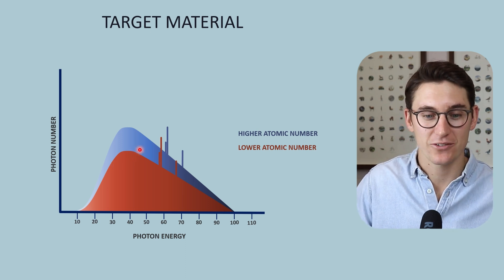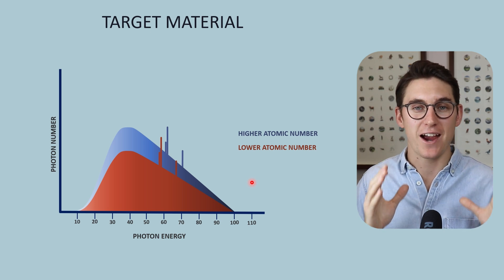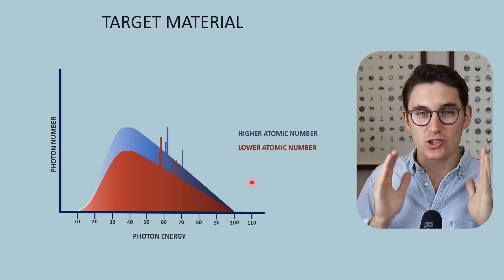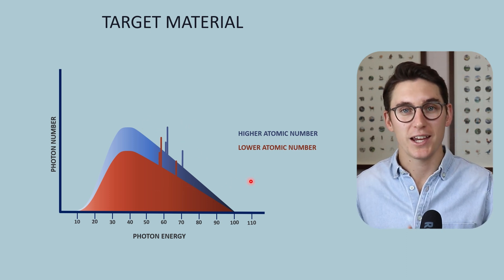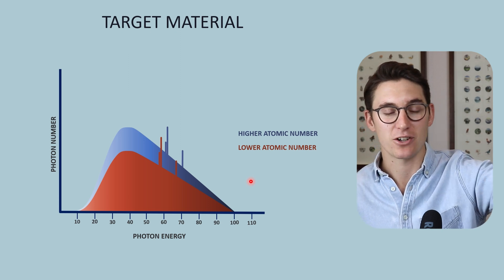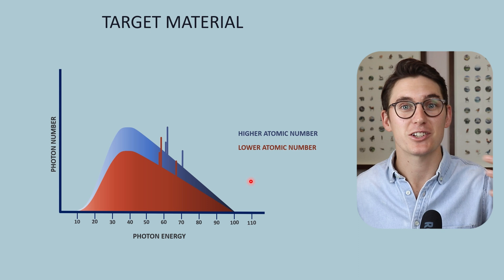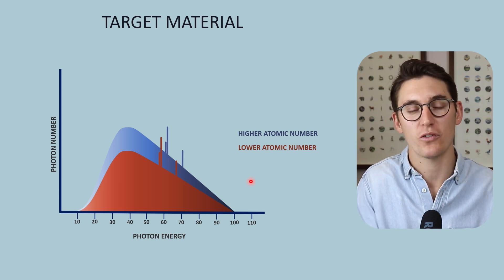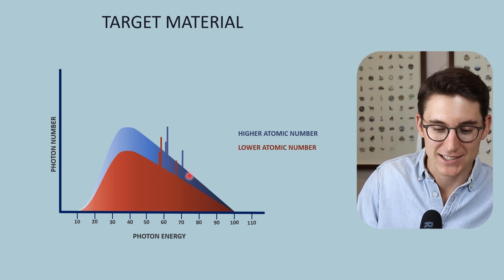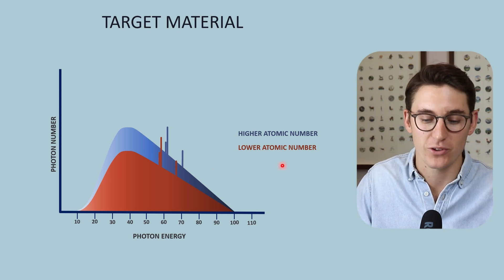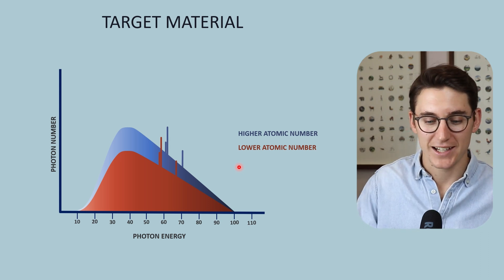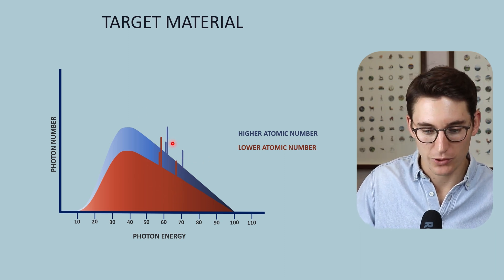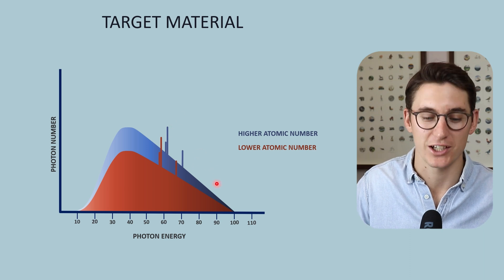Notably, our characteristic x-rays will change with target material. Characteristic x-rays are named as such because they are characteristic for that specific target material — these discrete energy levels act as fingerprints. In other fields of science, when we observe electromagnetic radiation released from distant planets, we can determine their atomic structure based on characteristic x-rays. So a change in target material largely leads to a change in x-ray beam quantity, with very little impact on x-ray beam quality — the only real energy change is in the characteristic radiation.